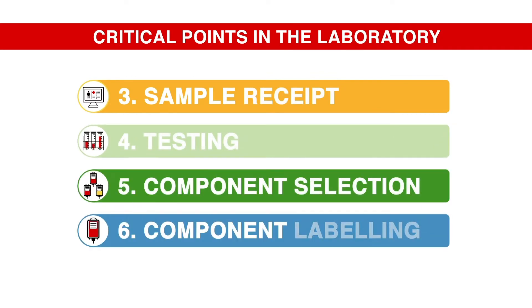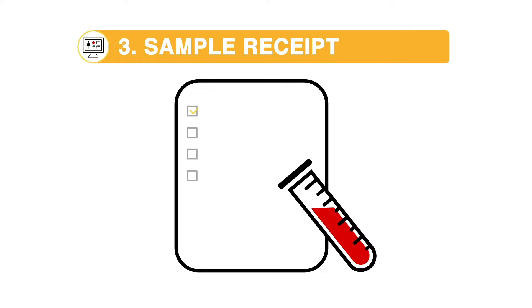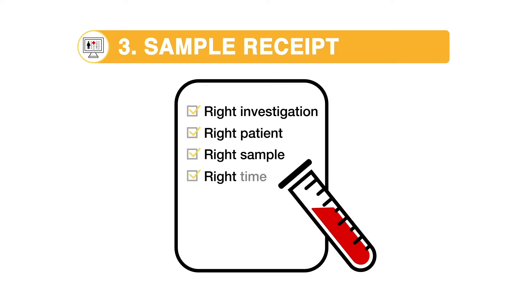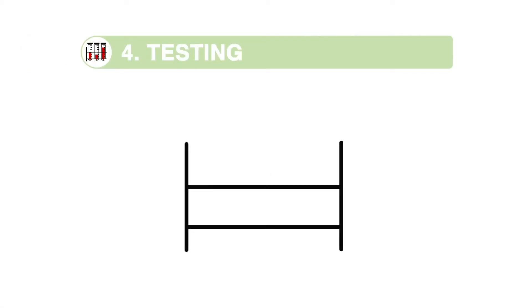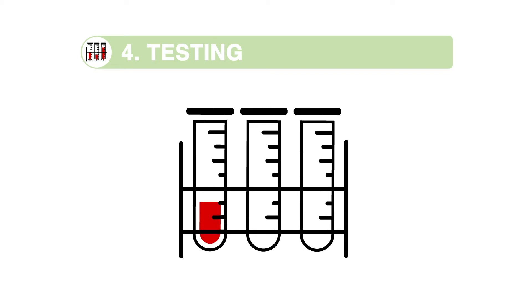These four stages are critical points in the laboratory. Sample receipt and registration: the right investigation is performed for the right patient on the right sample at the right time. Testing: the correct and accurate analysis of samples is required to ensure the safe provision of blood components for transfusion, undertaken with full compliance of local and national guidelines for pre-transfusion testing.